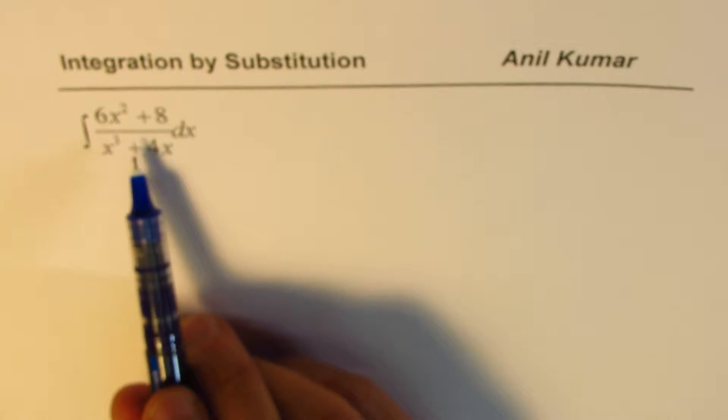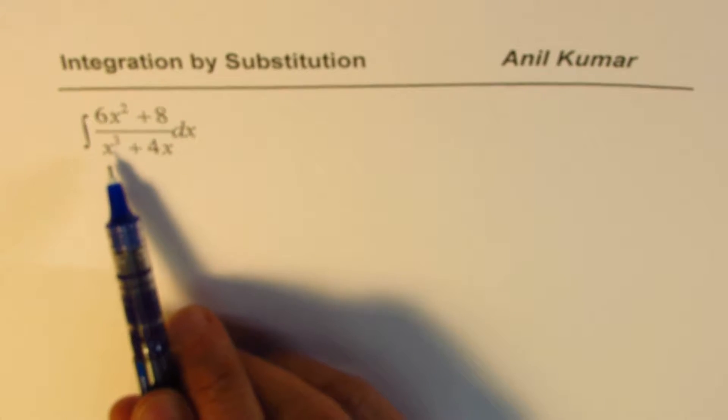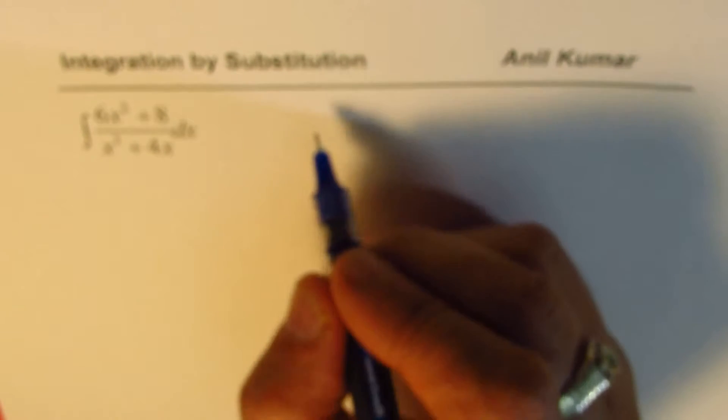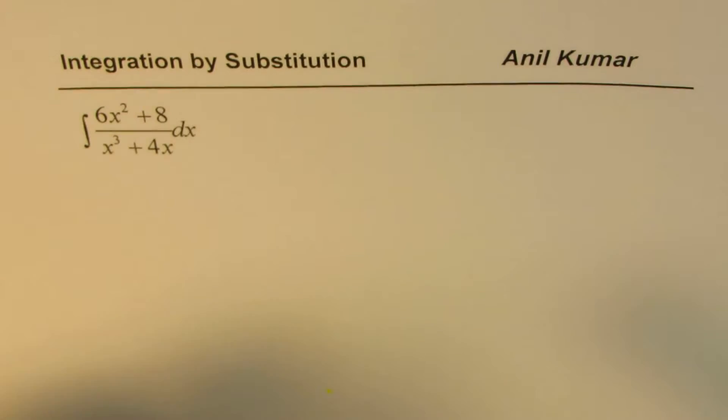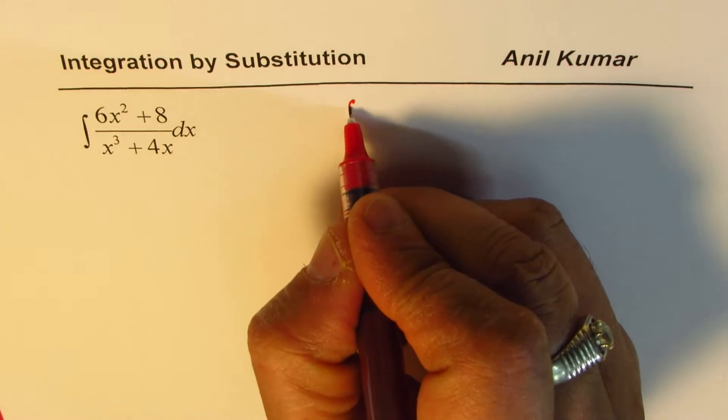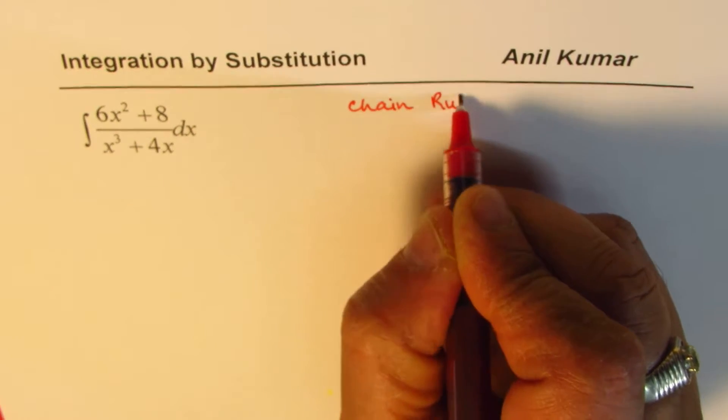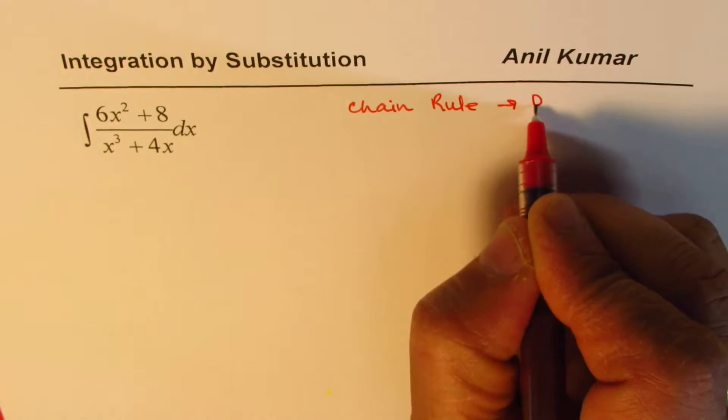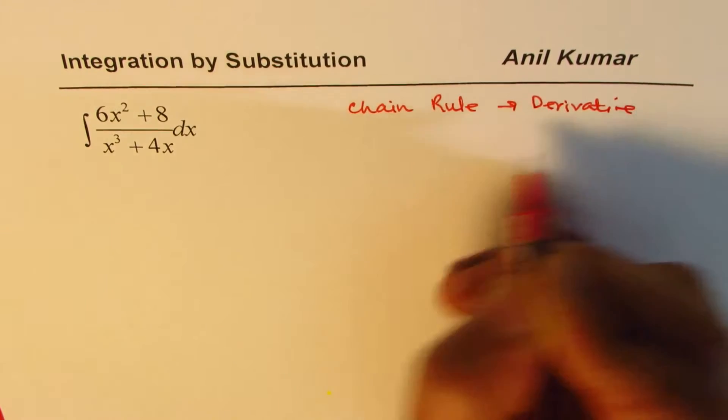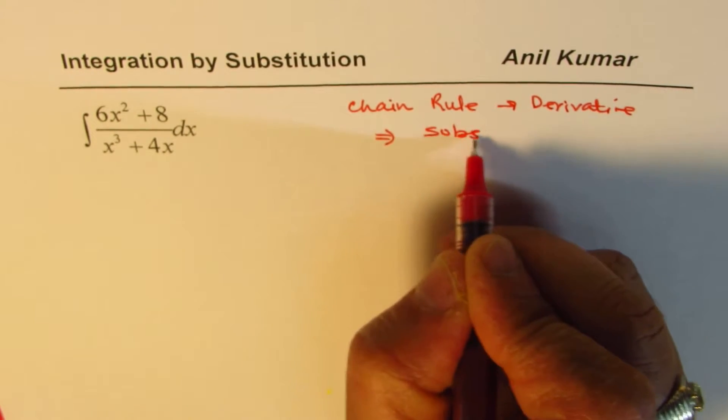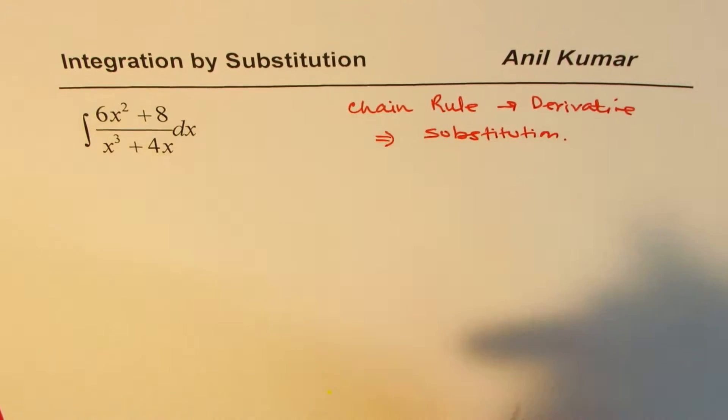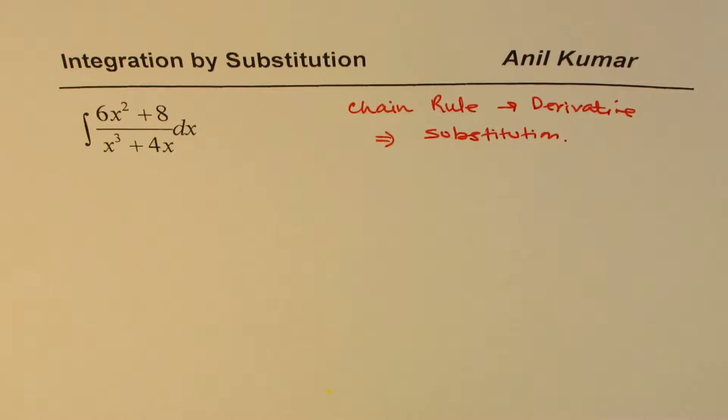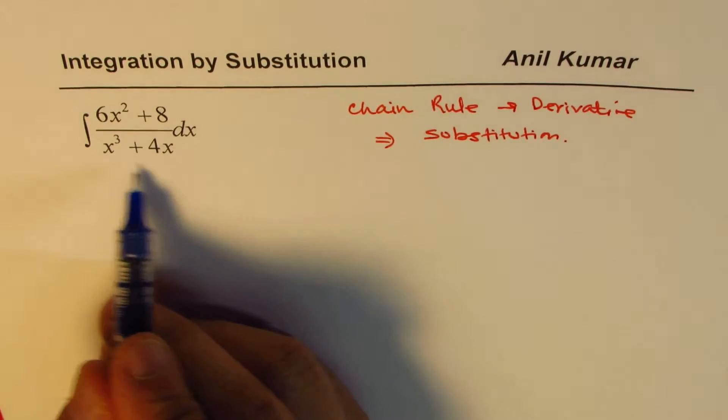What you really notice here is that the numerator could be the derivative of the denominator. And that reminds you of the chain rule when you did derivations. So whenever you are reminded of the chain rule in derivatives, substitution is a good candidate for integration.